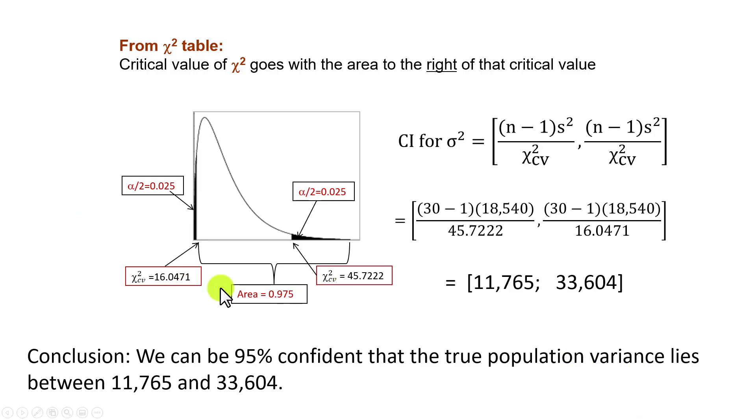Armed with those two values, we plug them in to determine the lower limit of the interval to be 11,765 and the upper limit to be 33,604. We can be 95% confident that the true population variance lies between these two limits. If you want to express it in terms of standard deviation, simply take the square root of these two numbers: 108 on the low side and 183 on the upper side.